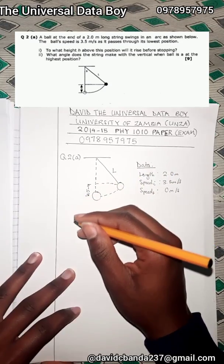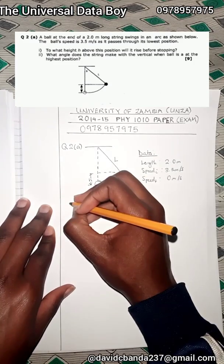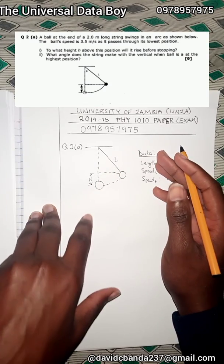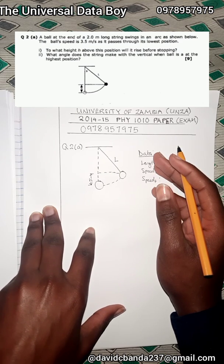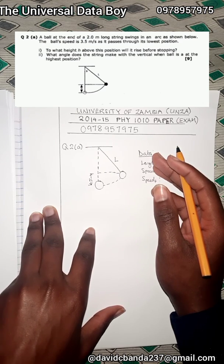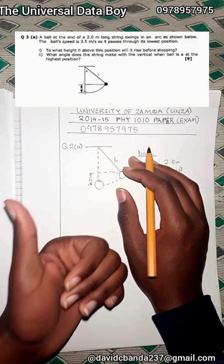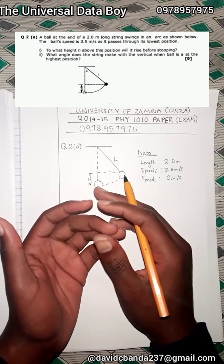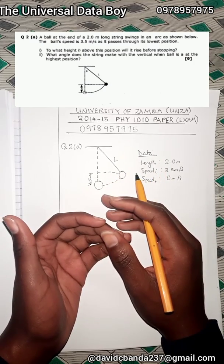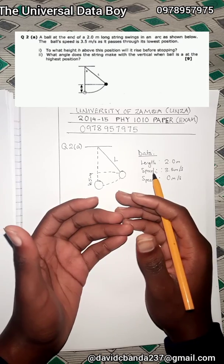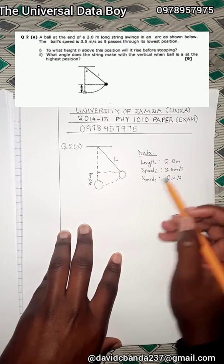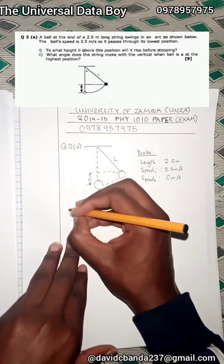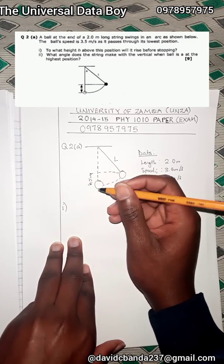For roman numeral one, we need to understand this is a pendulum. We're finding h, so it's quite useful to use the conservation of energy, because we're given the velocity — from which we can find kinetic energy — and we want height, from which we find potential energy. That's how we know conservation of energy applies. Other methods would require more data, but the data we have here is limited.